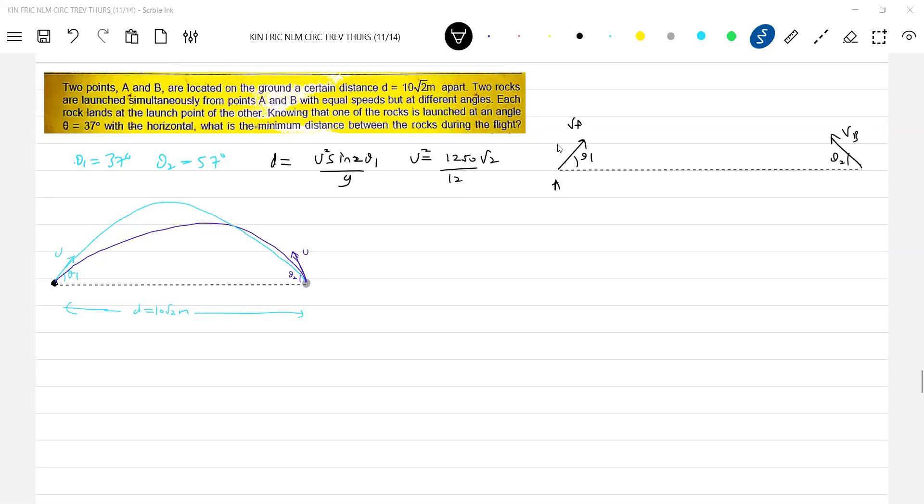Ball B at theta one, at theta two, for L distance. There's VA and VA is equal to VB equal to U, then we know it.